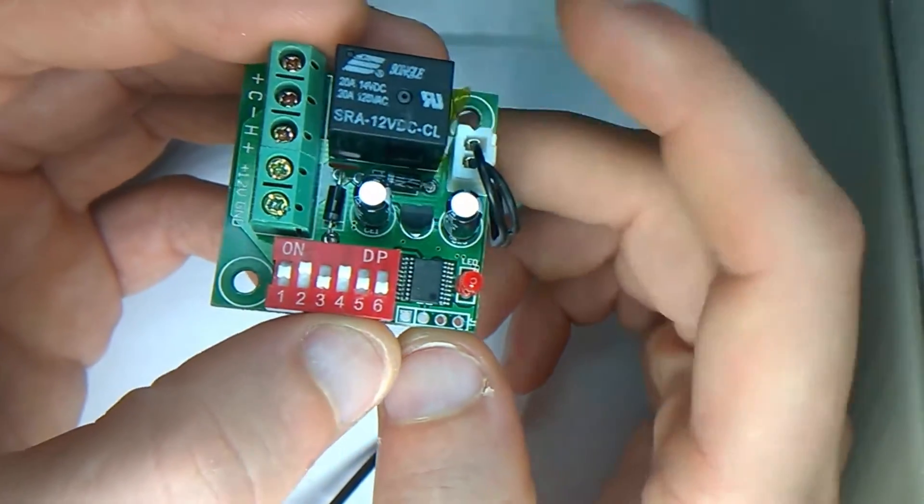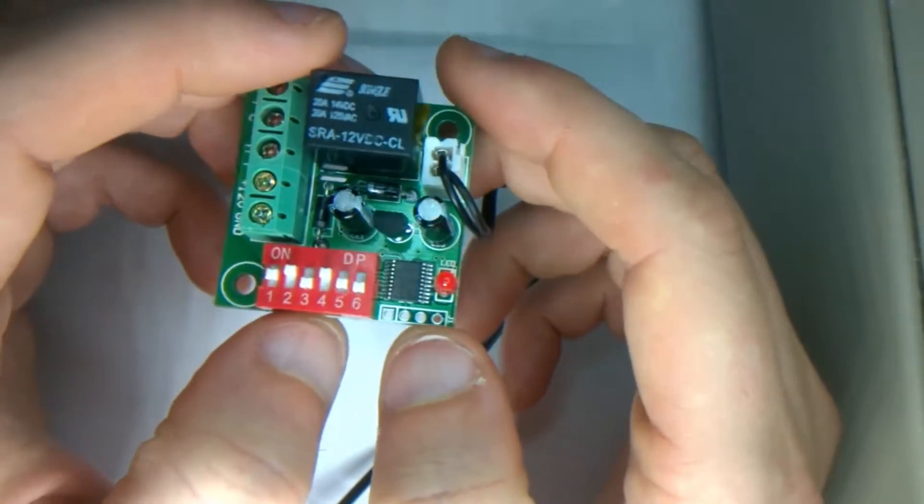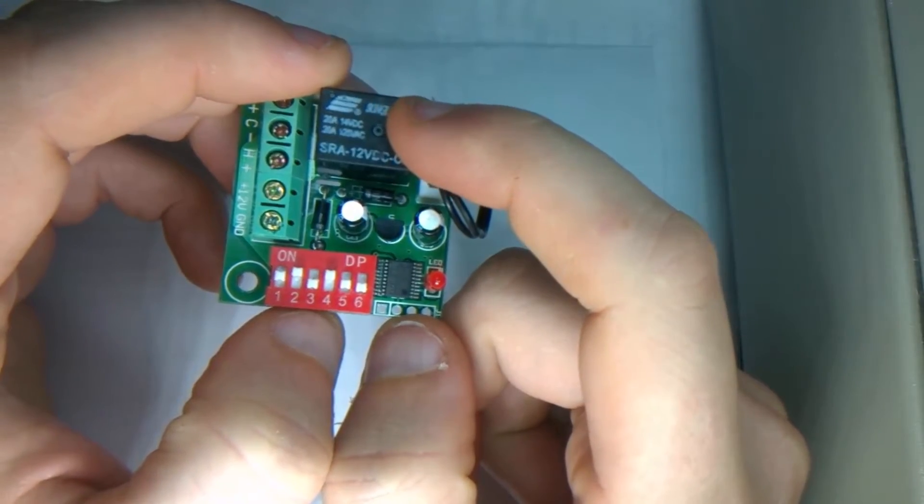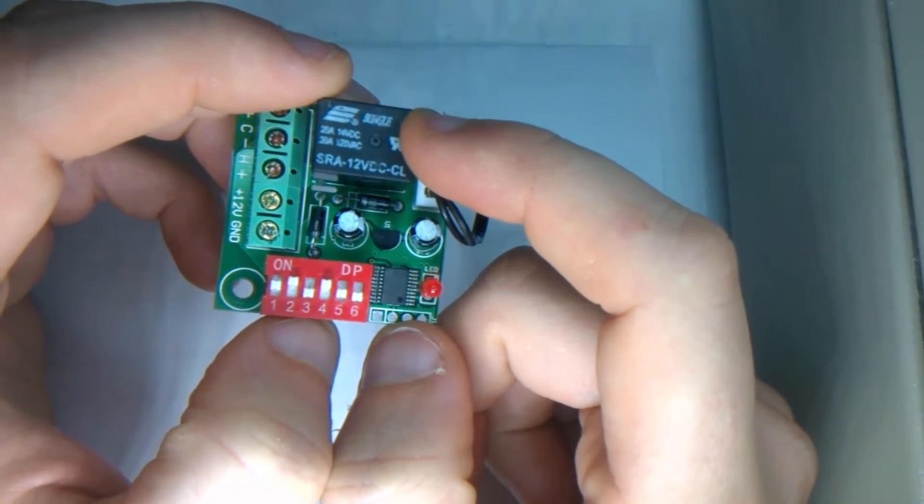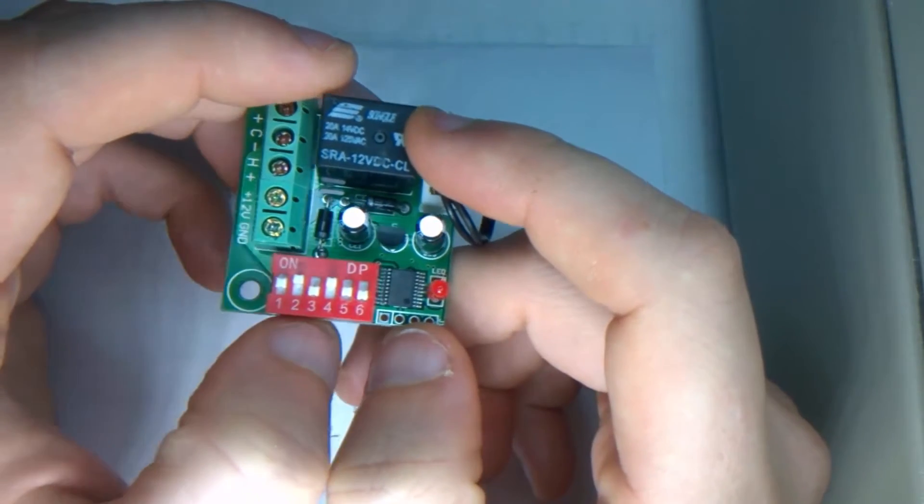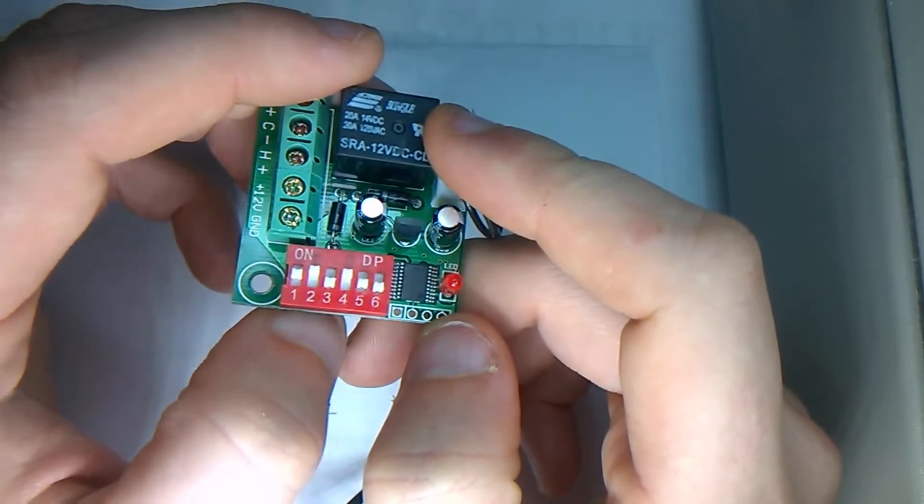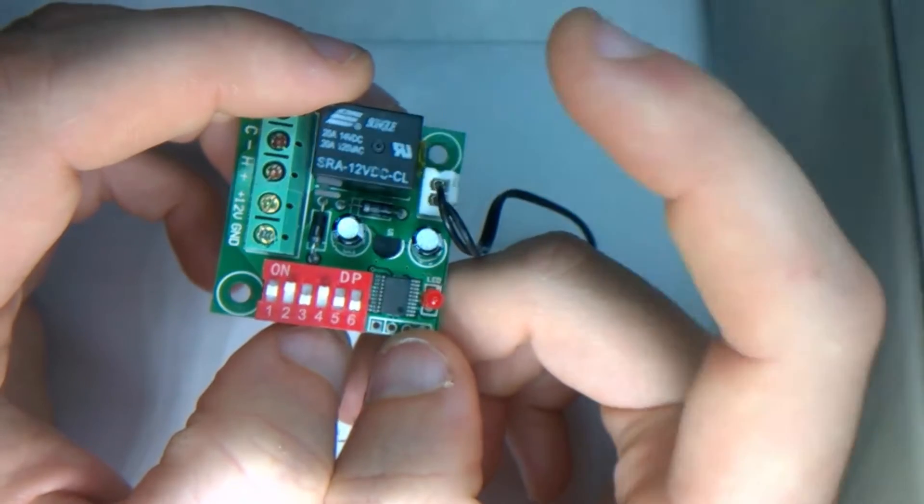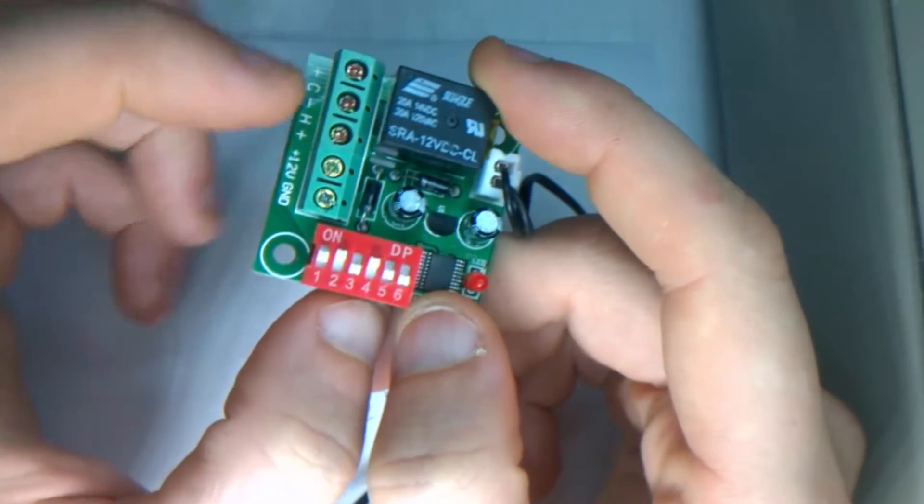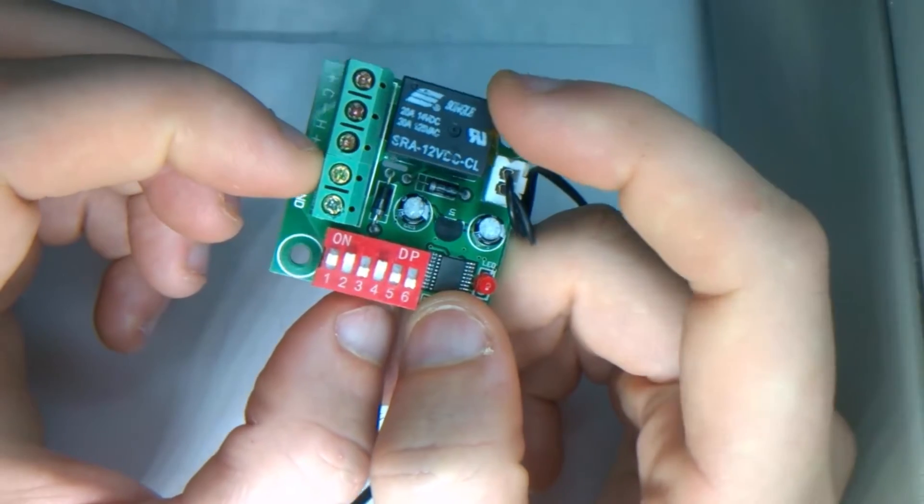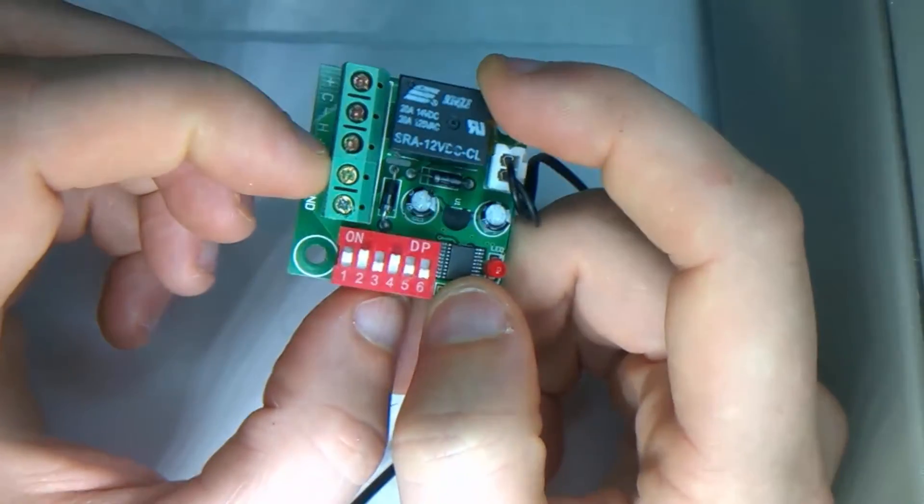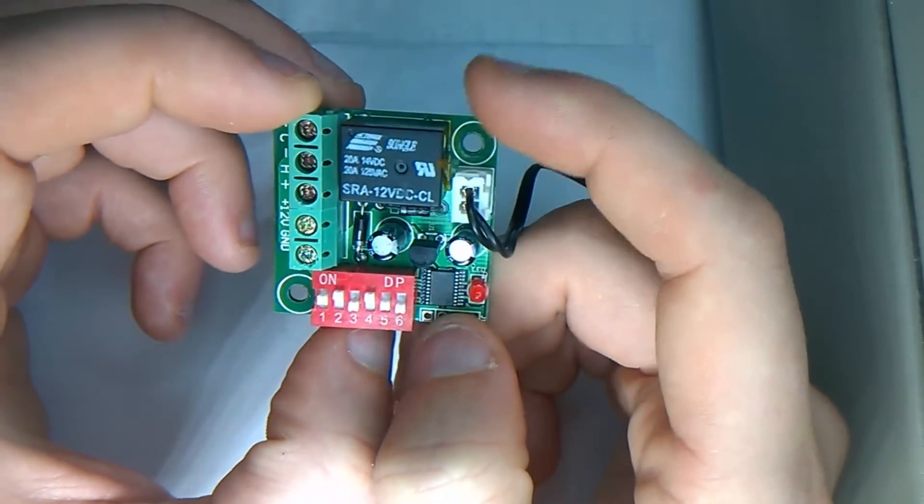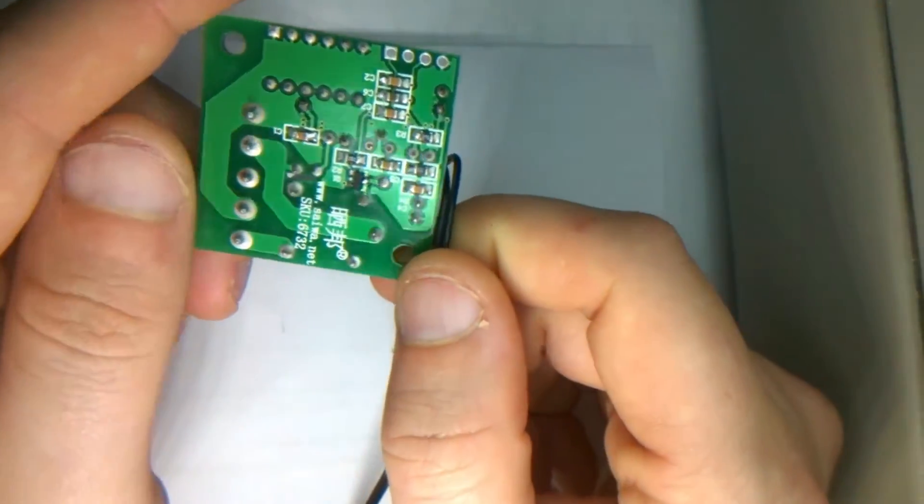When this hits the temperature you set it for, this light will illuminate which means this will activate, turning the fan on. When it goes below the temperature that you set, that light will go off and that relay will go off. When this relay's off, the heater is activated. When this relay is activated on, the C which is the fan, the cold will turn on.